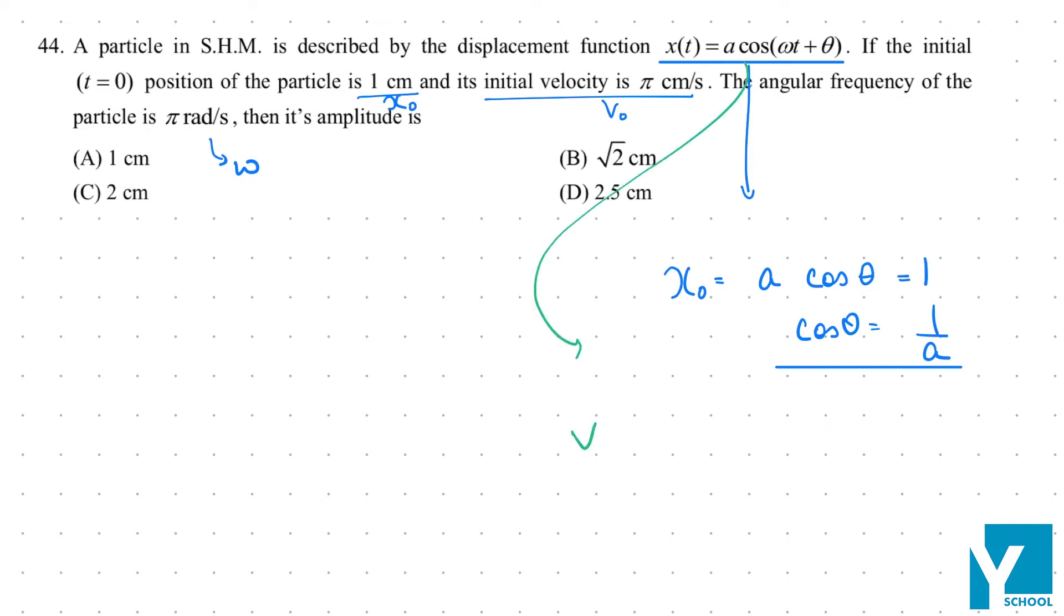If I write this function and write v0, what will happen? Minus a sine(ωt + θ) into ω. Basically, v0 is minus a ω sine of θ.